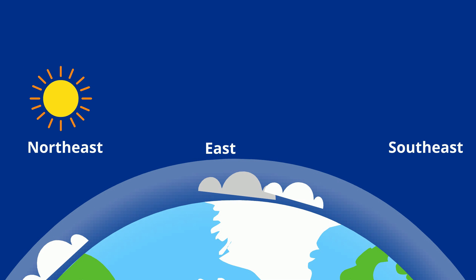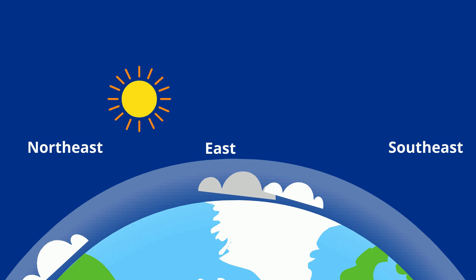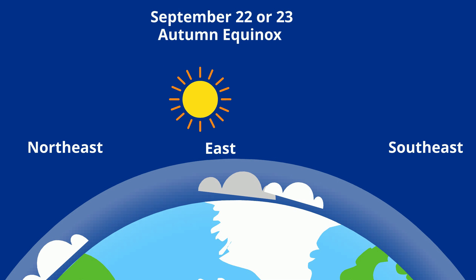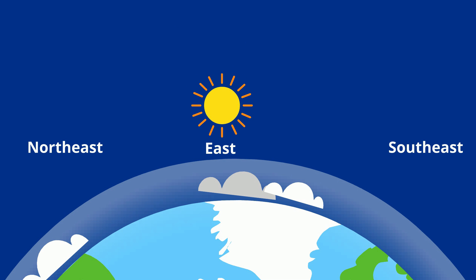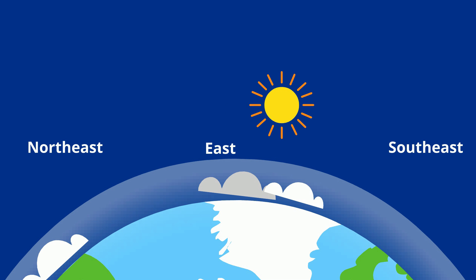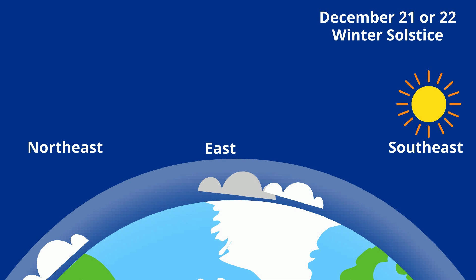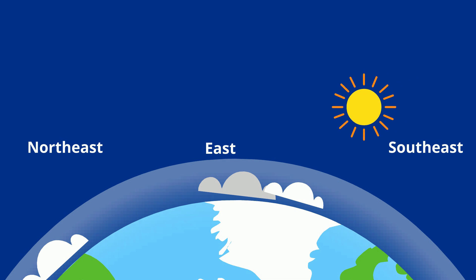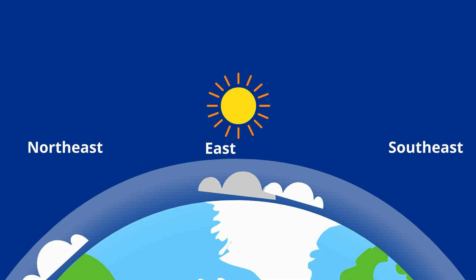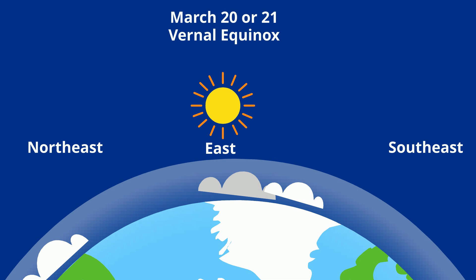After the summer solstice, the sun starts rising less to the north until September 22nd or 23rd, and this is the autumn equinox. The sun will again be directly above the equator. After this, the sun starts rising a little more southeast until December 21st or 22nd, and now you have the shortest day of the year, called the winter solstice.